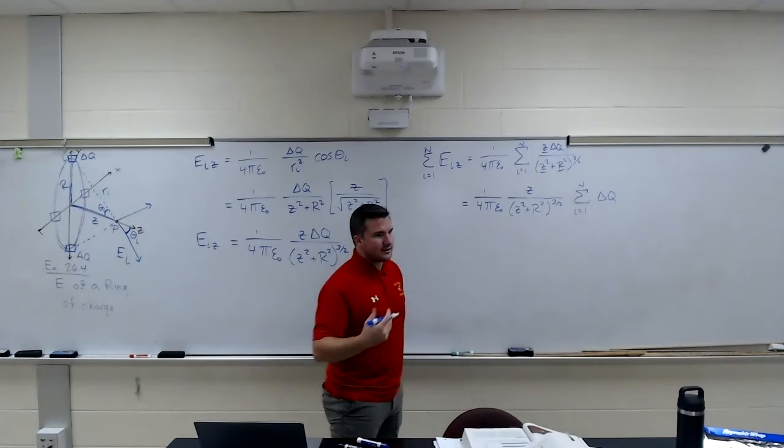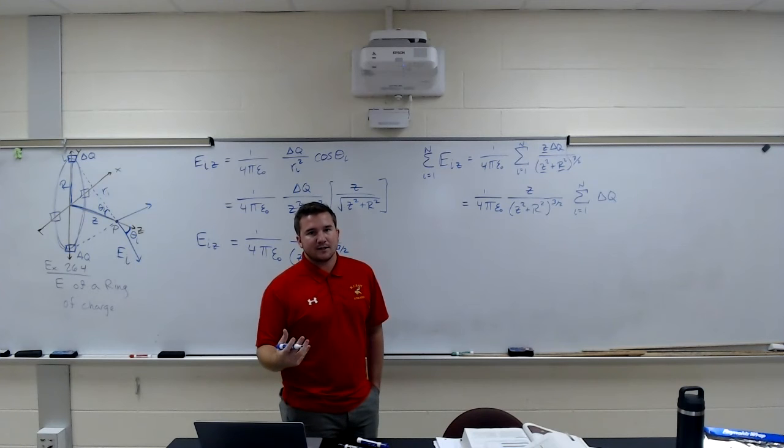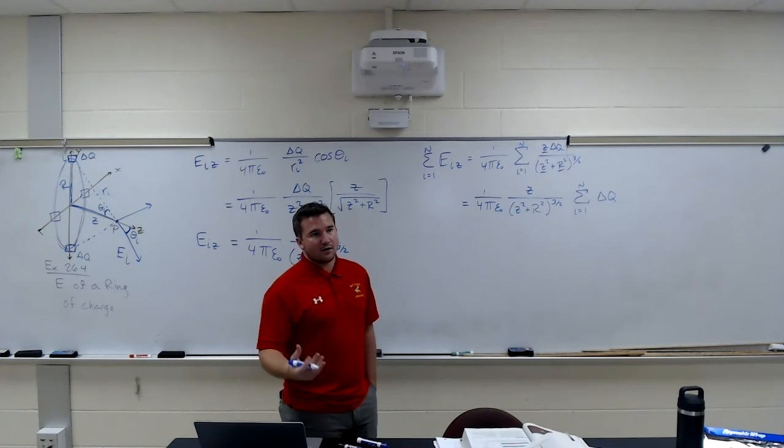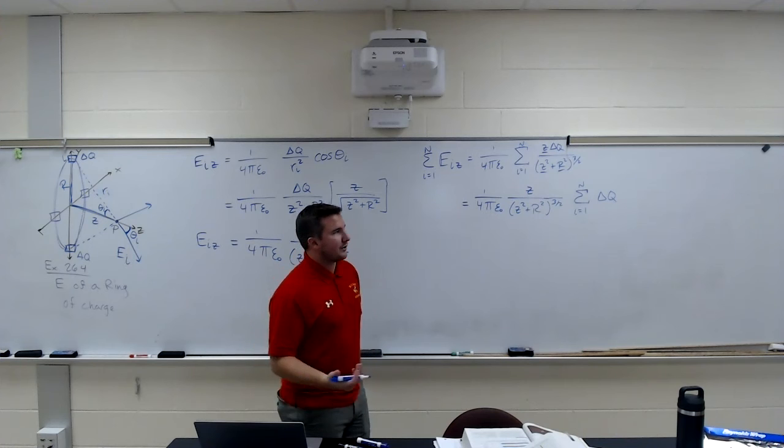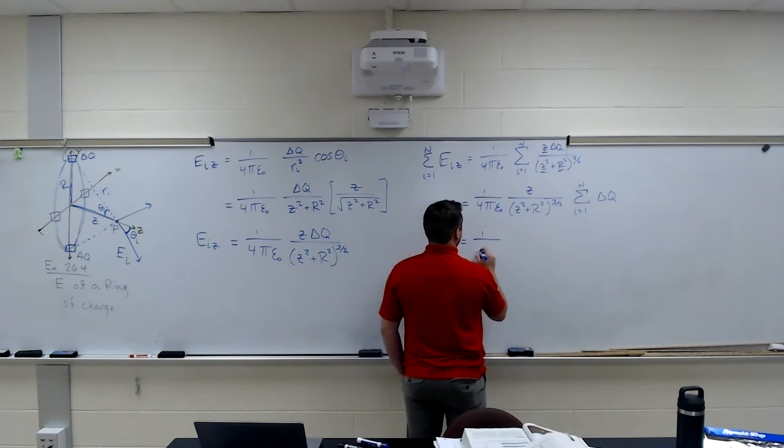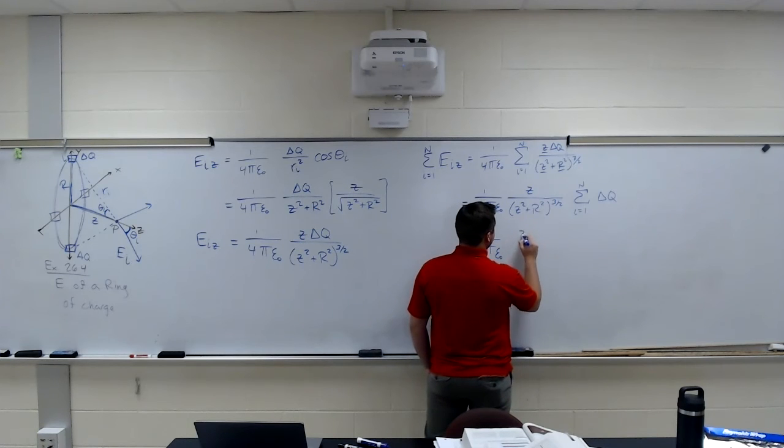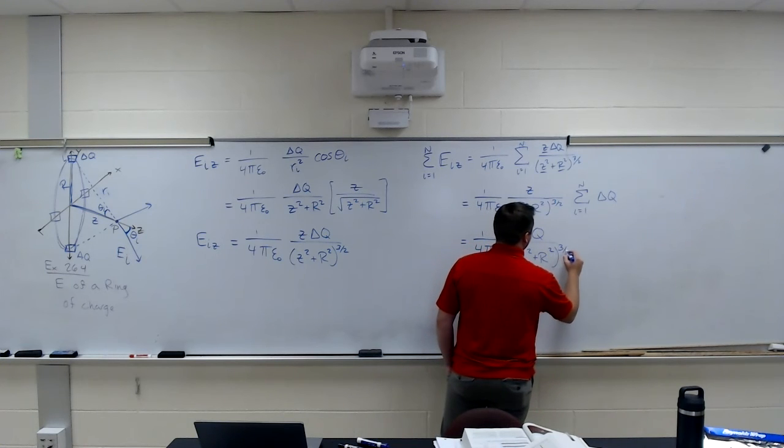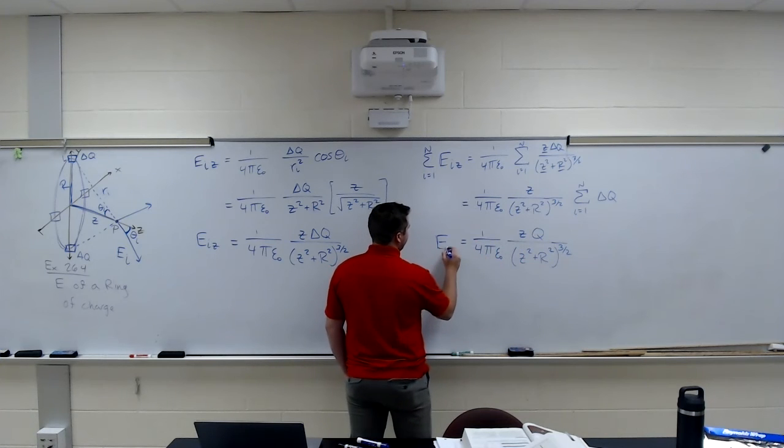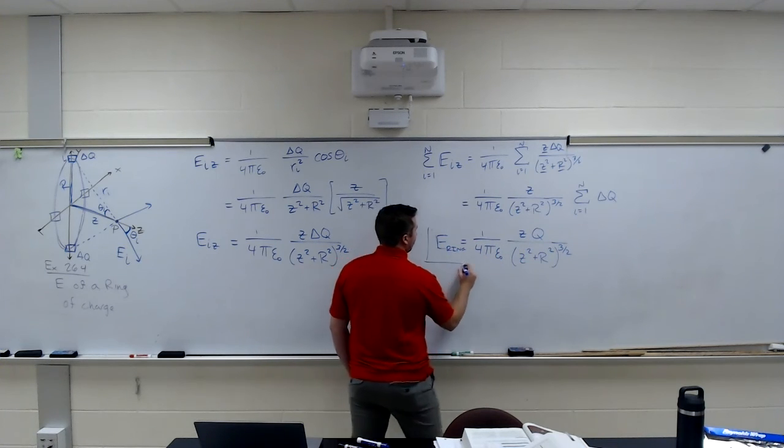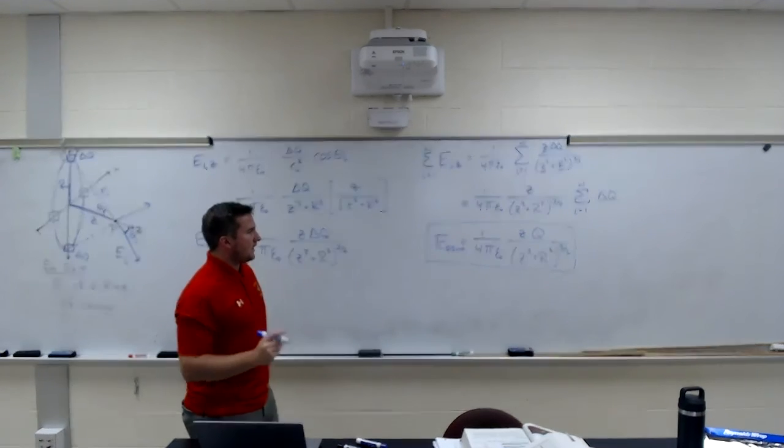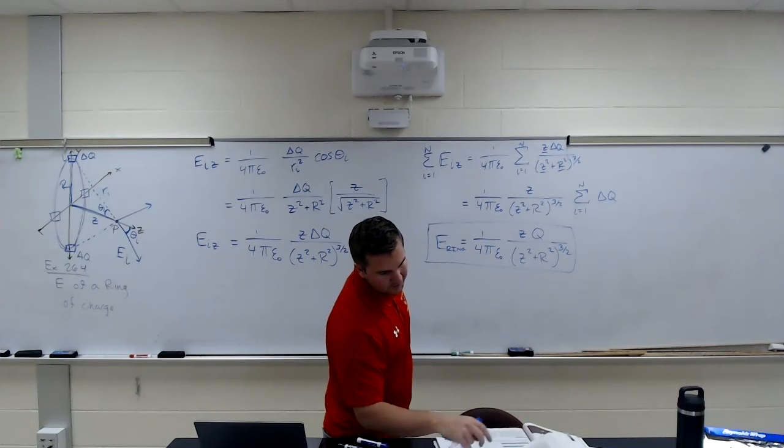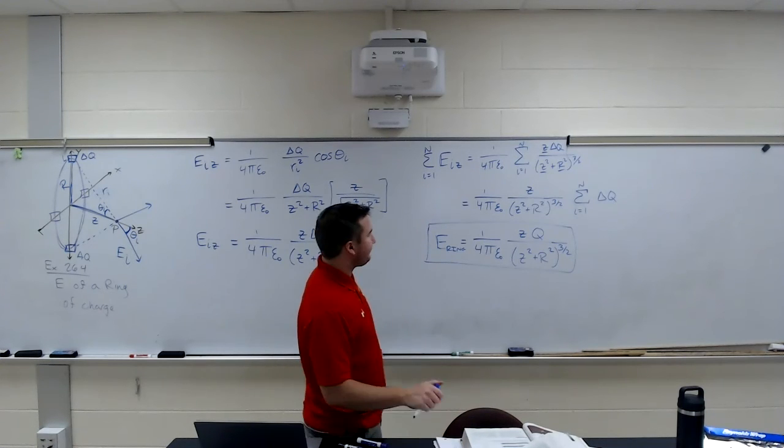So we get lucky with this one because there's not anything that we have to integrate. There's so many constants. There's nothing that's variable that the only thing we're left with inside the summation is the change in Q. If we add all the delta Q's together, all the small increments of Q, we end up with the total charge, which is Q. So we get 1 over 4 pi epsilon ZQ over Z squared plus R squared to the 3 halves power. And there is the electric field for a ring. 1 over 4 pi epsilon Z times Q over Z squared plus R squared to the 3 halves. Double check, see if I got it right. Because, you know, I mess up sometimes. I'm not perfect. Nailed it.